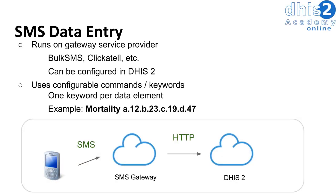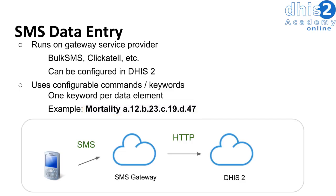We also have SMS data entry. SMS data entry uses gateway service providers in order to connect through to DHIS2. We've provided some links in the resources section so you can read more about how SMS gateways work. SMS data entry uses a code system in order to get data into the system. Here is an example of a code that might be used to enter mortality data in DHIS2, and we will show an example of using an SMS code to get data into DHIS2 later on.